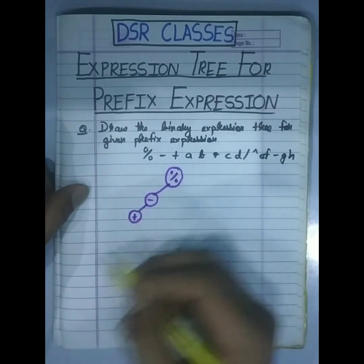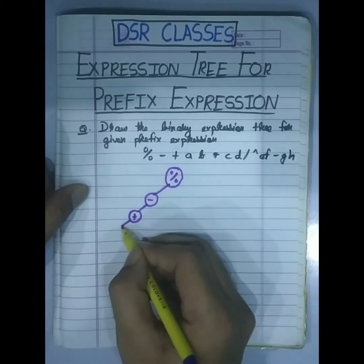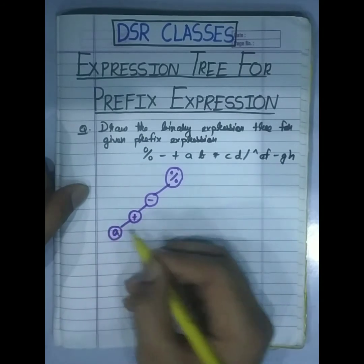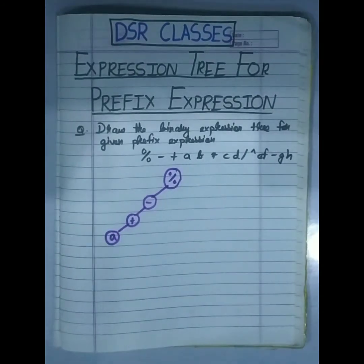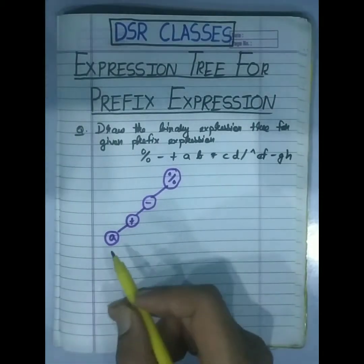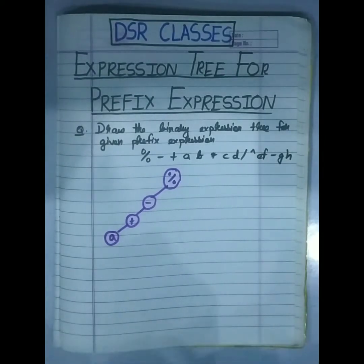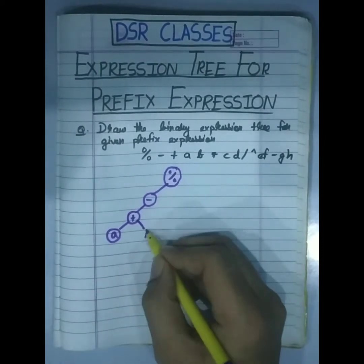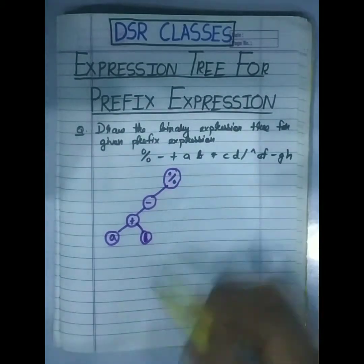Then 'plus' goes to the left of minus. Then 'a' goes to the left of plus — since 'a' is an operand, it becomes a leaf node. Then 'b' goes to the right of plus — 'b' is also an operand and becomes a leaf node.